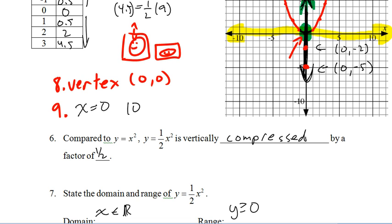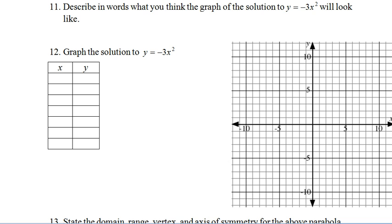And now 10 just asks us is our parabola opening up or down? And it is opening up like a cup. Question 11 asks us to describe in words what we think the graph of the solution to y equals negative 3x squared will look like. Well from the 3, we can predict that it will be vertically expanded by a factor of 3. And my writing is awful.